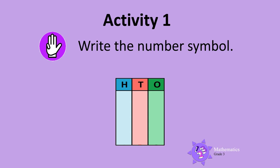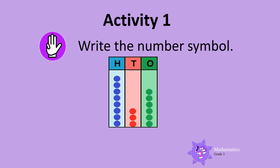Activity 1. You will use this abacus to write number symbols and number names. The column with the letter H is the hundreds column. The column with the letter T is the tens column. And the column with the letter O is the ones column. Let's do the first one together.